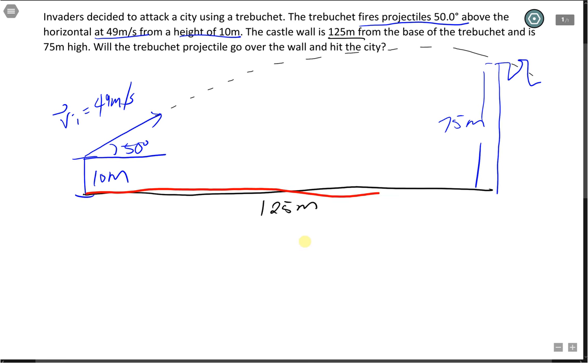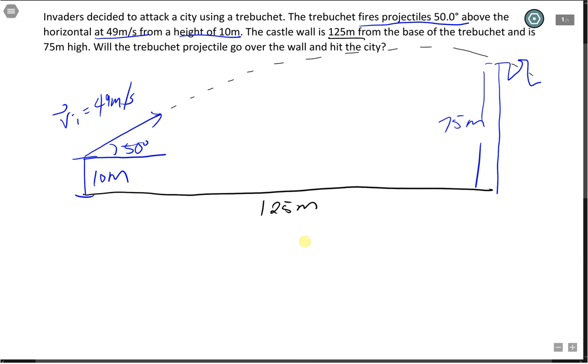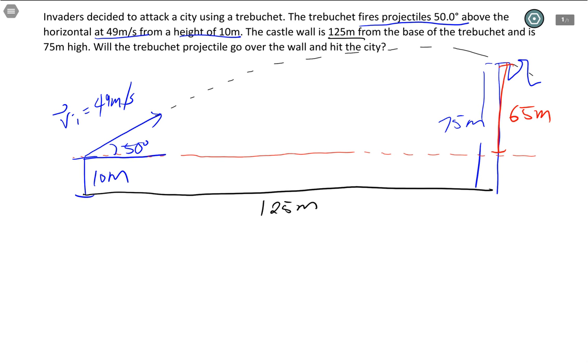What we can do is if we are able to find the time for the projectile to travel a horizontal distance of 125 meters, we can use the time to find out how high the projectile will be at that particular time. One thing we do have to be careful of, our trebuchet is already 10 meters above the ground, which means the displacement of the projectile in the vertical direction only needs to be 65 meters, not the 75 meters. So be very careful of that one.